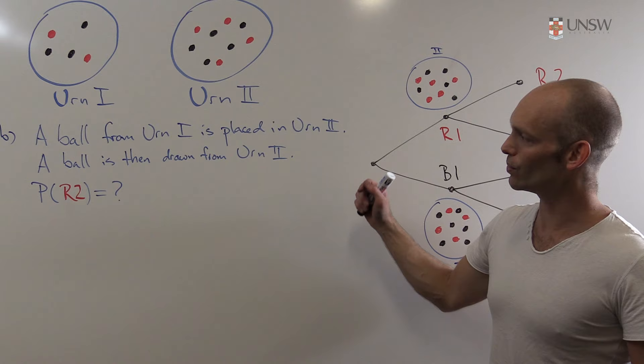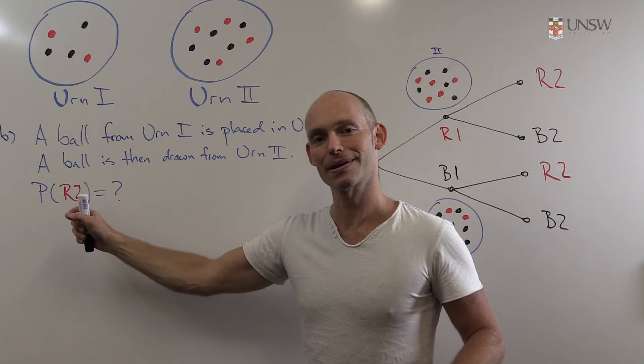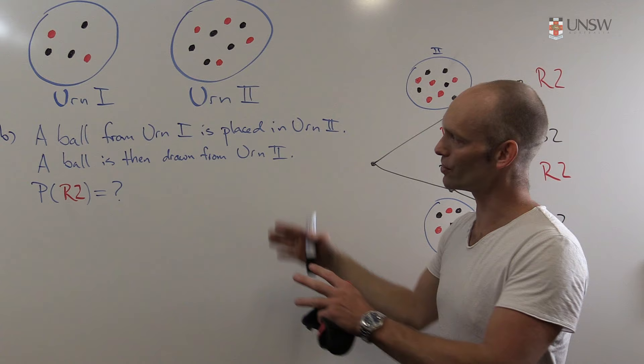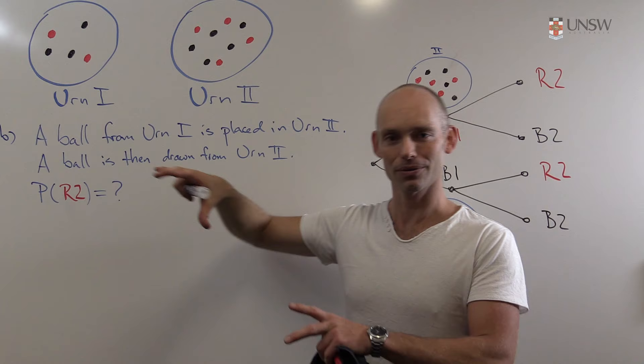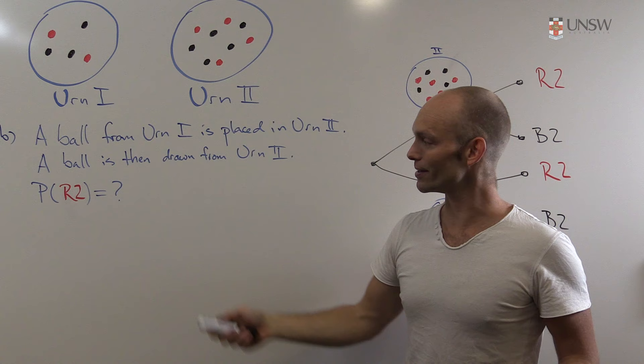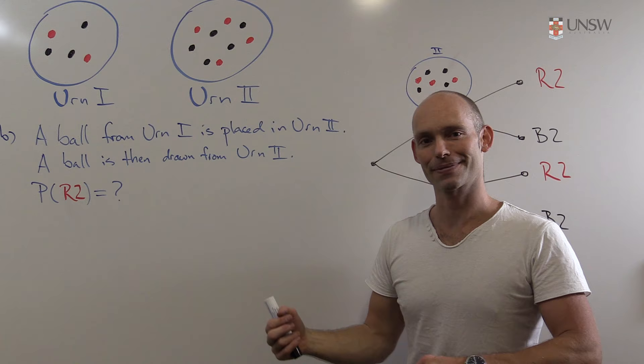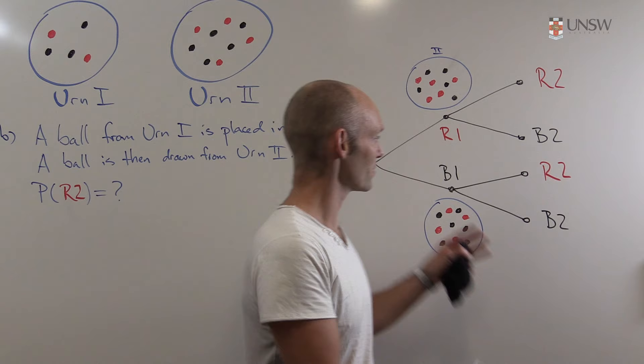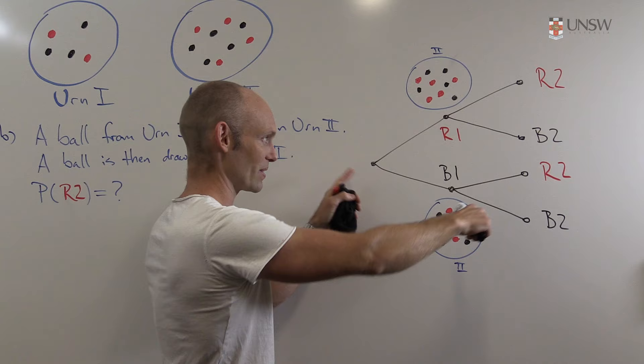In part B we're doing something similar — again looking at the probability of ending up with a red ball — but the scenario is more complicated. Now we don't just choose an urn at random. Instead, we look at urn one, draw a ball from it, transfer that ball into urn two, then draw a ball from urn two and ask what color it is. The decision tree has the same number of branches but requires more explanation.